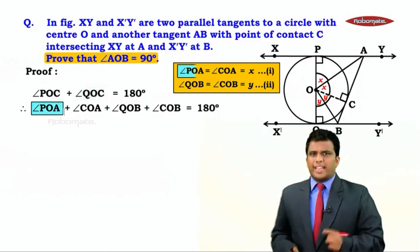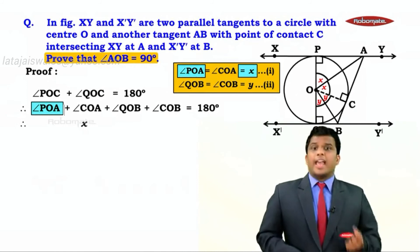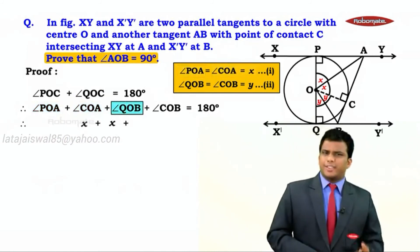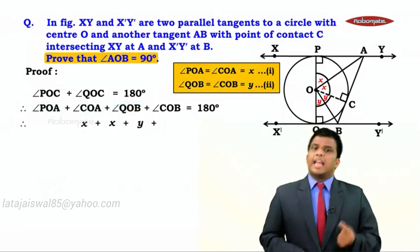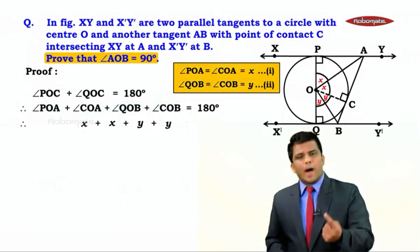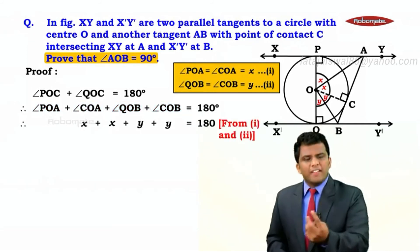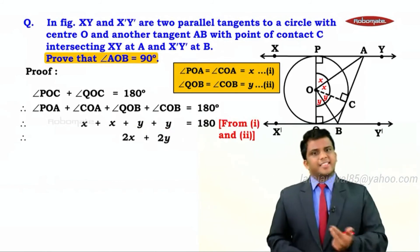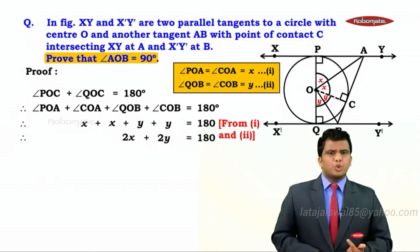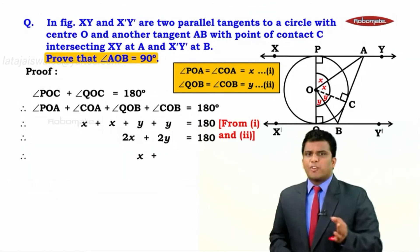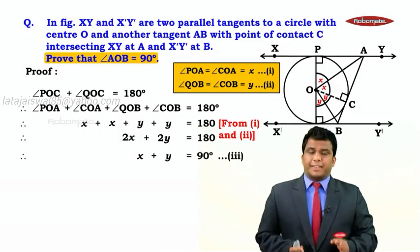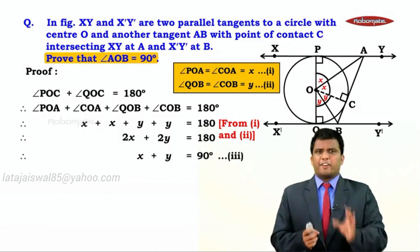Angle POA was assumed as X, and so was angle COA. QOB and COB are Y and Y. We got this from 1 and 2. So we have X plus X plus Y plus Y equals 180. That means 2X plus 2Y equals 180. When we divide throughout by 2, we get X plus Y equals 90 degrees. Let this be result number 3. This is what we could decipher from the figure. Now we have a relation between X and Y.